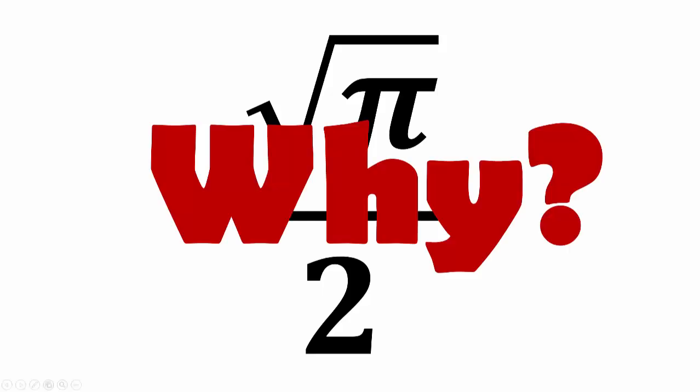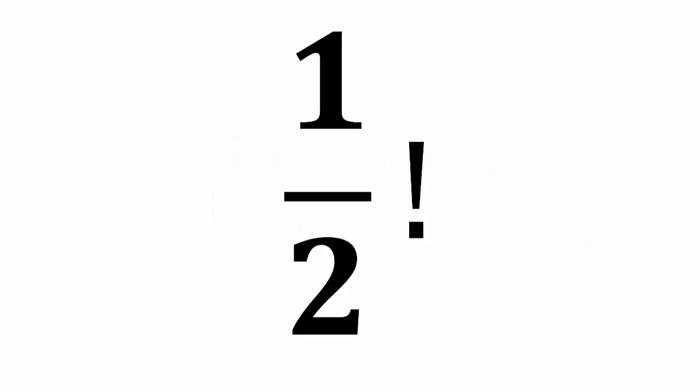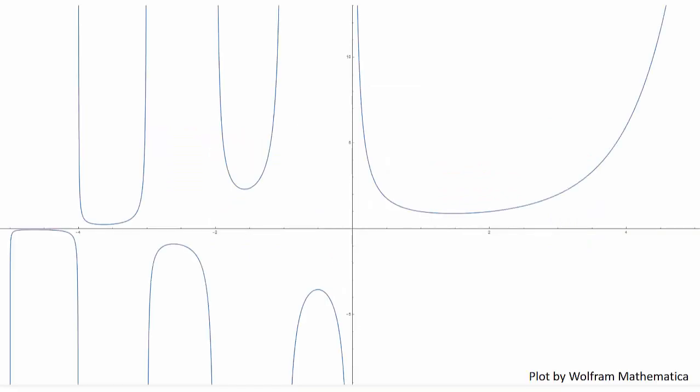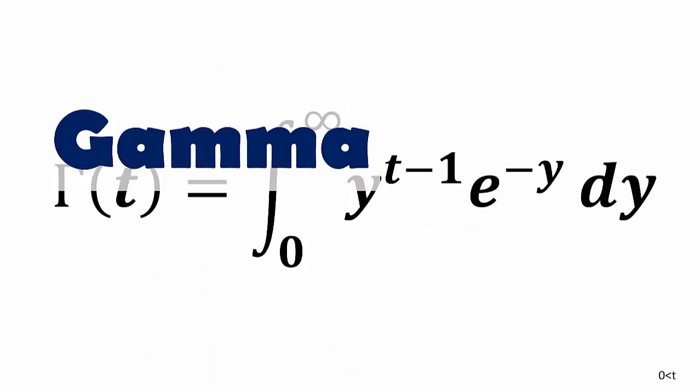But why? We want to extend the factorial function so it covers 1 half. And to do so, we need a function that looks like this. Or like this. Gamma function.